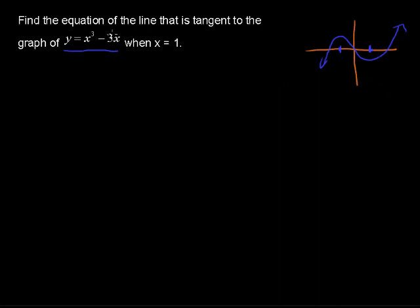And we want to know an equation of the line that is tangent to this graph when x equals 1. The tangent line, here's when x equals 1, right here. So, at this point, the tangent line, remember, is that line that just touches the graph. So, it's going to look like that.